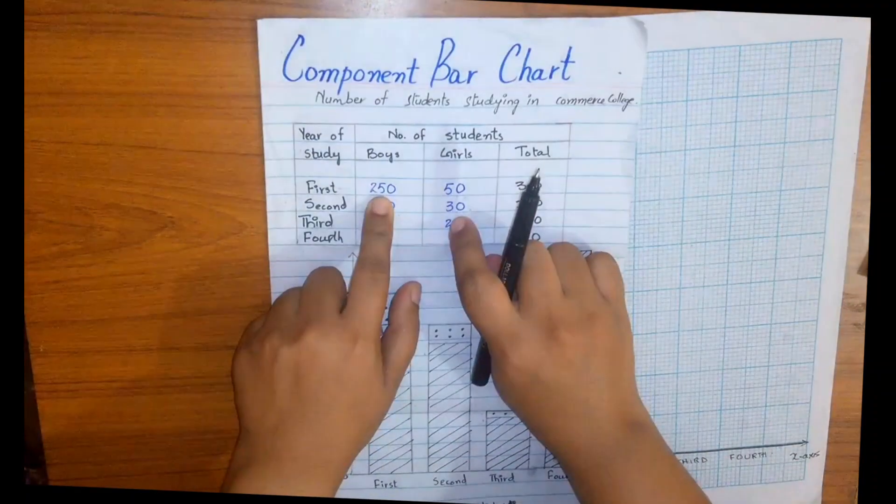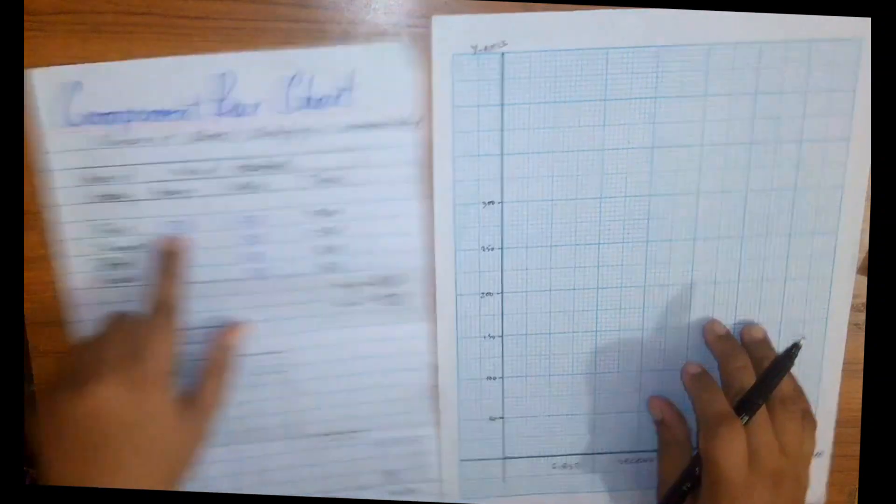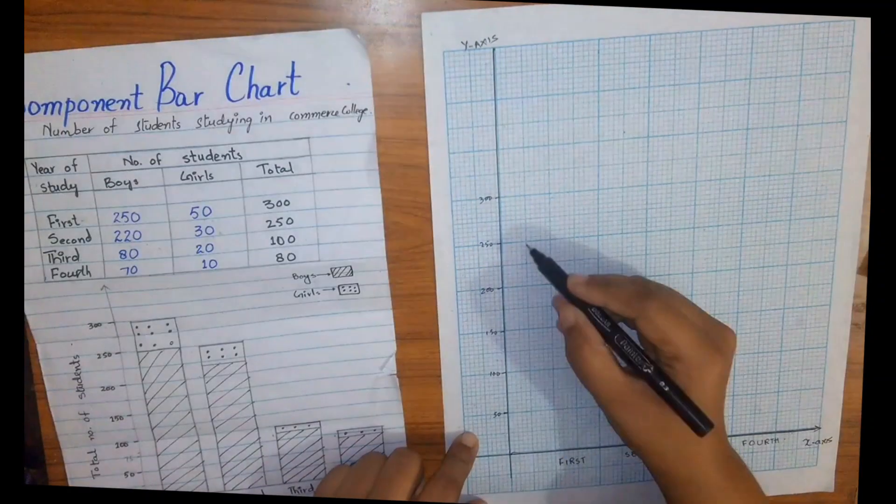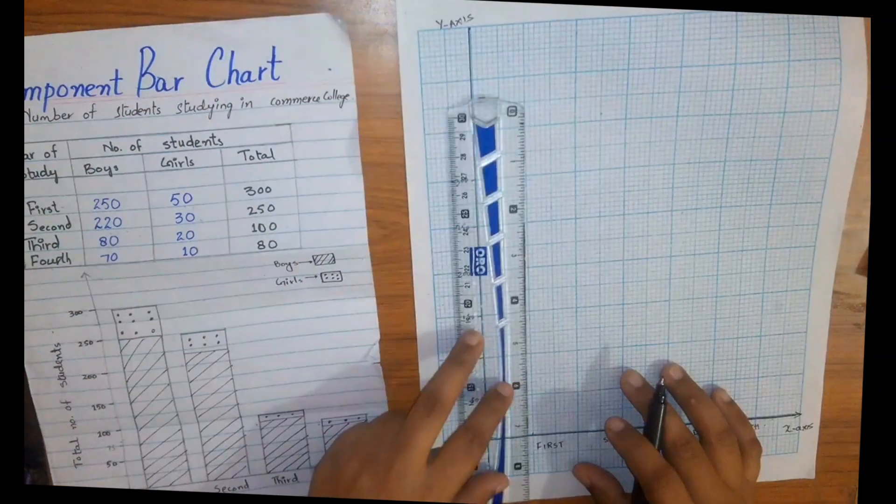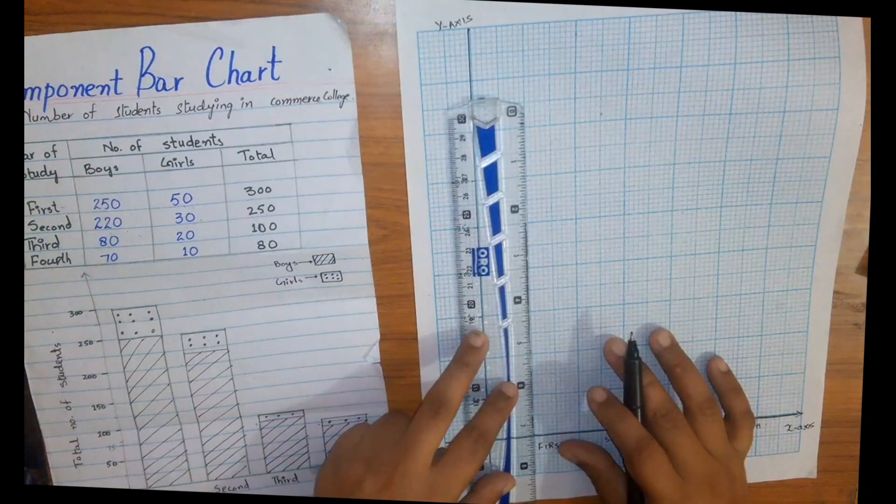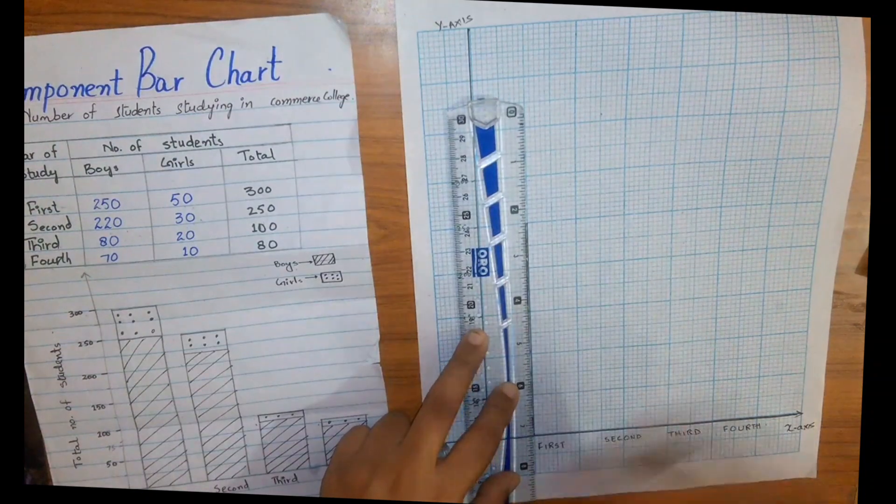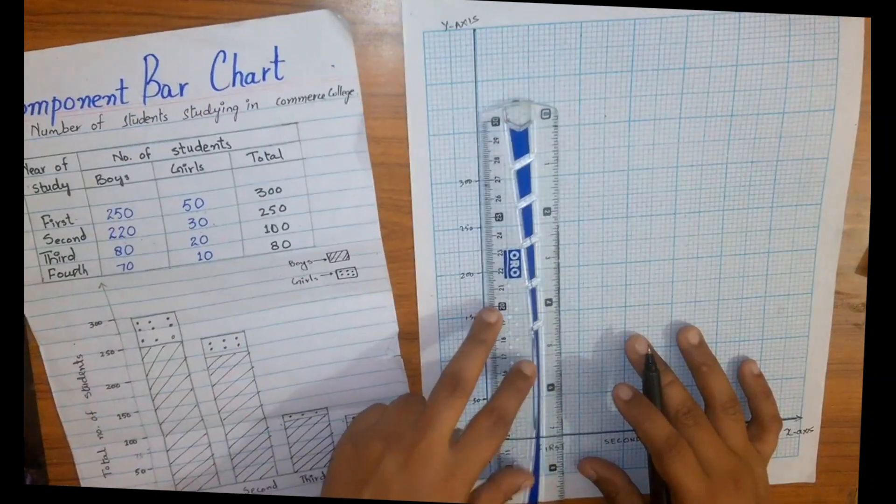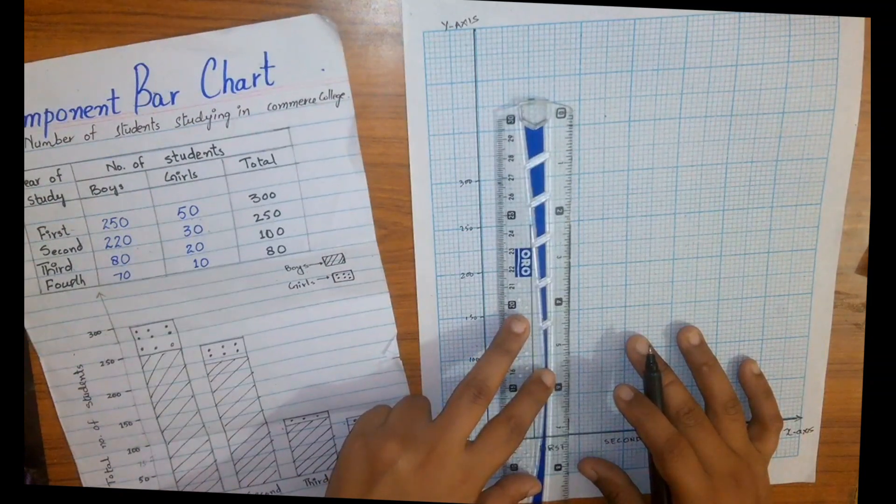Now we are going to draw a bar for boys who are studying in first year, which are 250. 250 is here. We will take a width of almost seven small squares. It's up to you which width of graph you want.